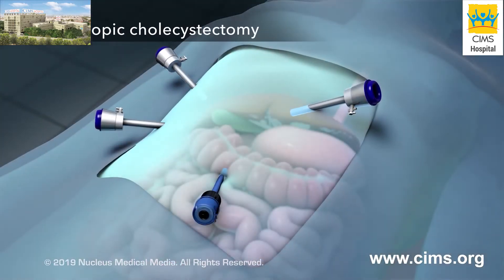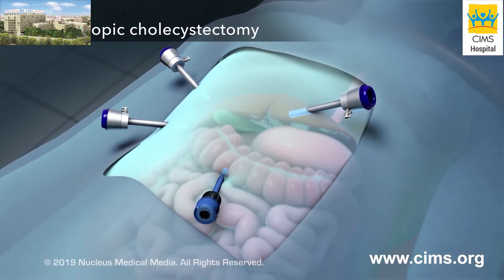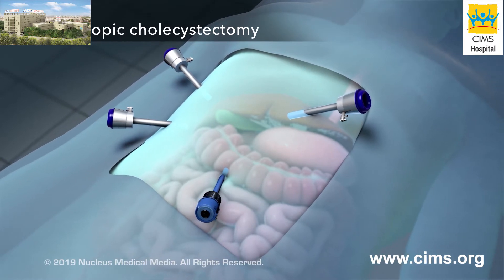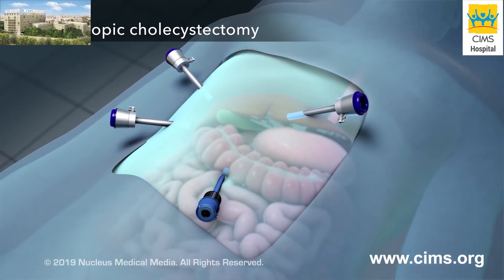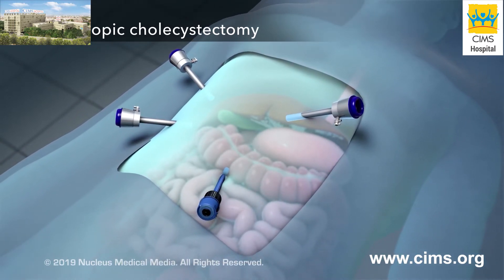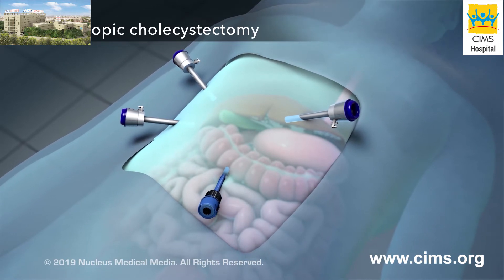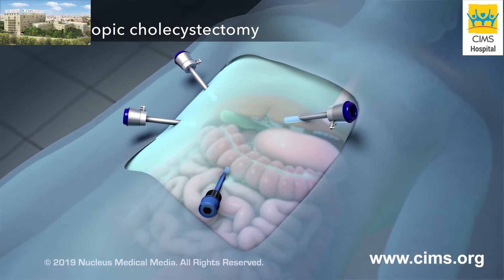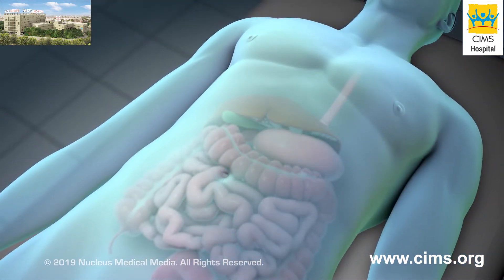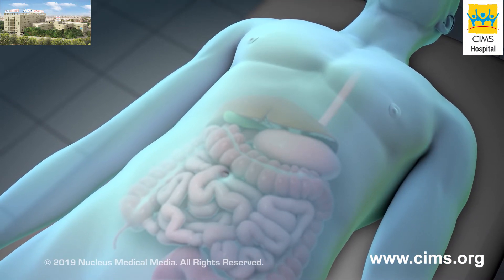A laparoscopic cholecystectomy is the most common way to remove the gallbladder. It uses tools inserted through tiny incisions in your abdomen. But you may need an open cholecystectomy if a laparoscopic cholecystectomy can't be done safely.